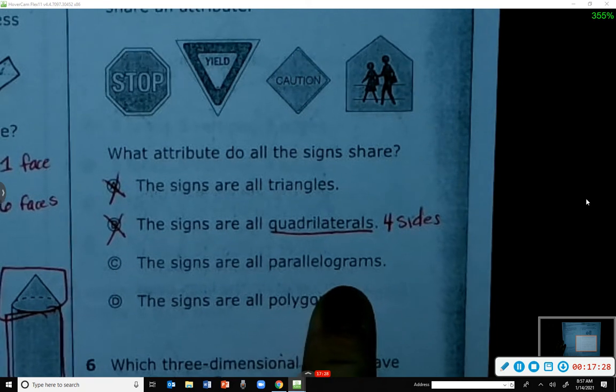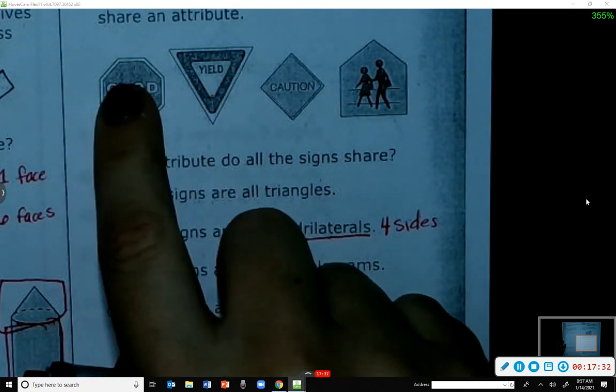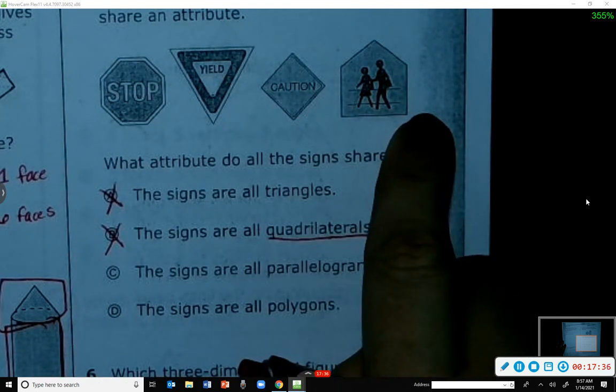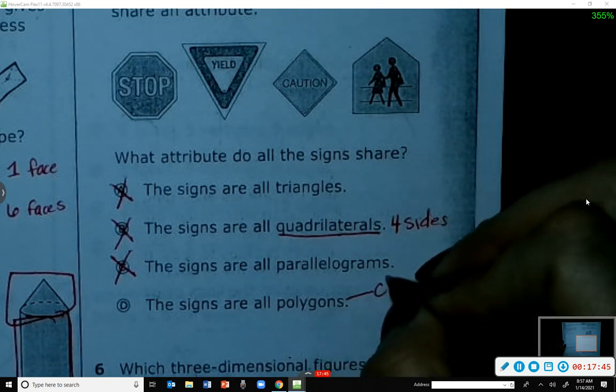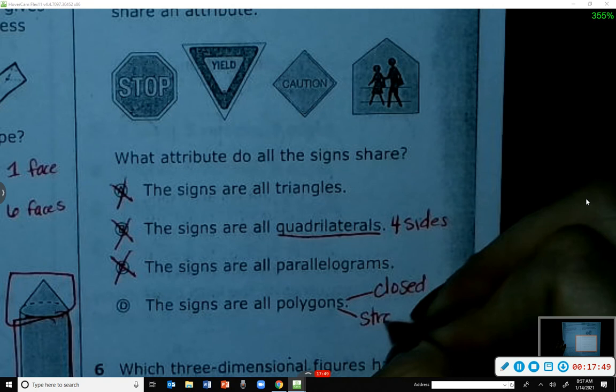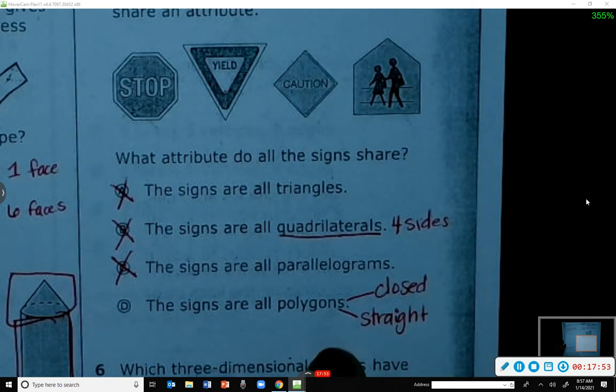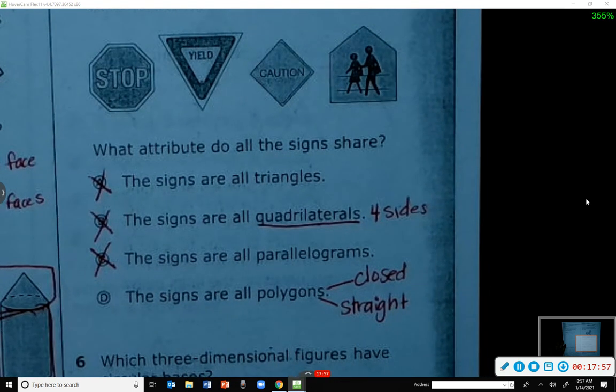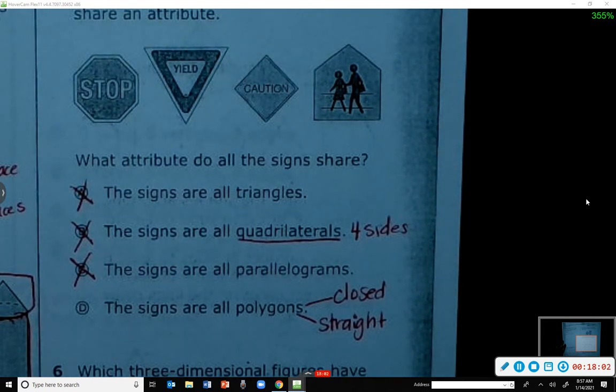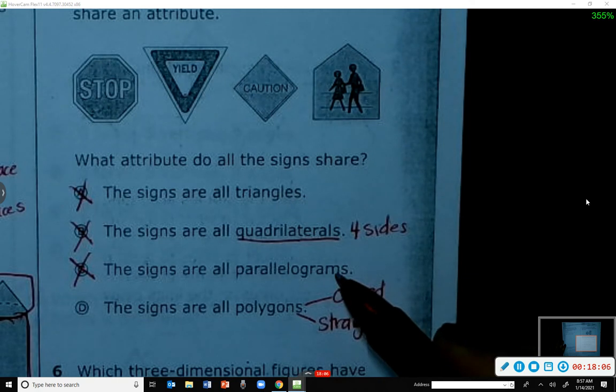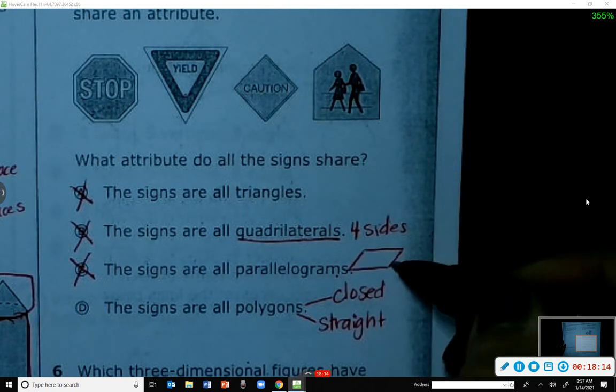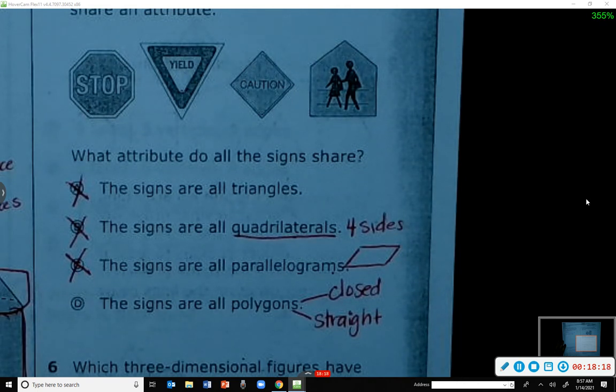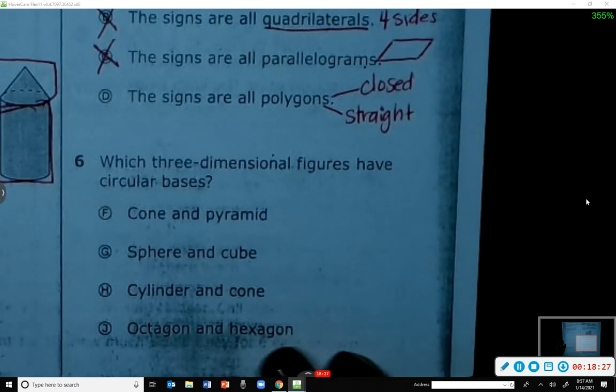The signs are all parallelograms? No, this is not a parallelogram, triangle's not, a pentagon's not. The signs are all polygons? Yes, because polygon means it's closed and straight, right? You might want to write this down just in case you have forgotten what that means. Parallelogram means parallel sides - top and bottom are parallel, and left and right are parallel. A polygon, to be a polygon, all it has to have is straight sides and it needs to be closed. So D was correct.